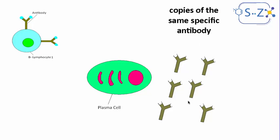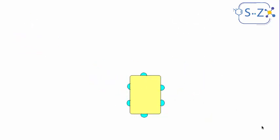We have copies of the same specific antibody. These antibodies will now be going to the bloodstream to fight the antigen. Now in the bloodstream, what happens?